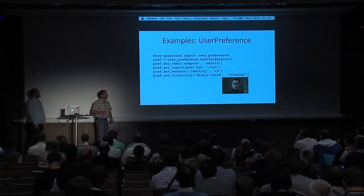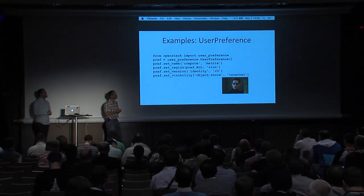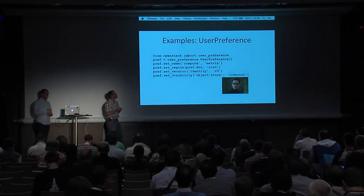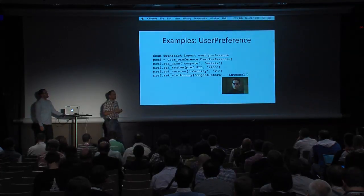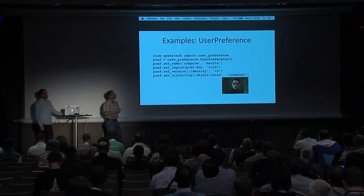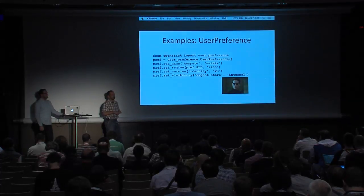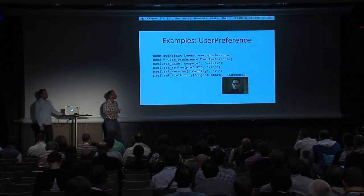The user preference class is where you basically store all your wants as far as which service you want to talk to, where you want to talk to it, what version, and also potentially the visibility of the URL — if you want to talk to an admin or a public interface. Some services are available through multiple visibilities.